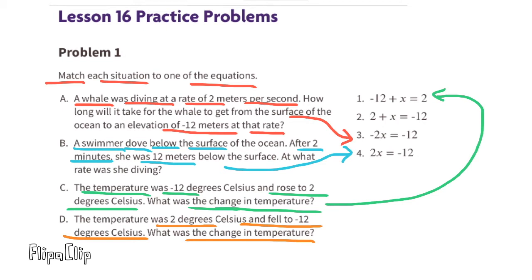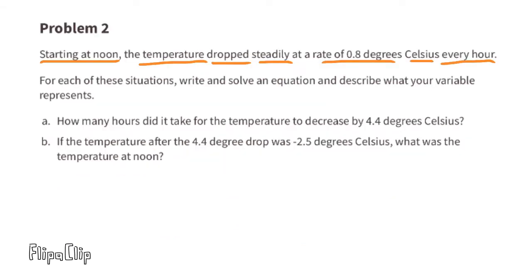Situation D: the temperature was 2 degrees Celsius and fell to negative 12 degrees Celsius. What was the change in temperature? We're looking for an equation representing a temperature starting at 2 degrees, falling an unknown amount, and becoming negative 12 degrees. Remember, X could be a negative number even though you're adding X. Equation 2 is a perfect match for situation D.